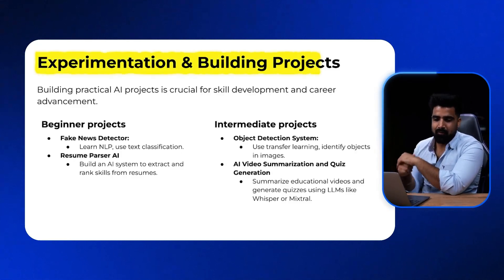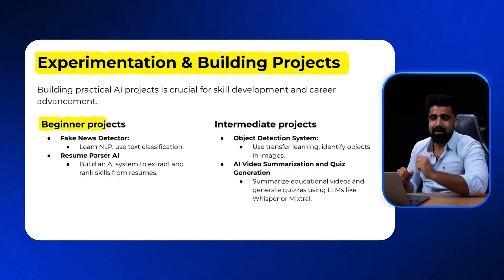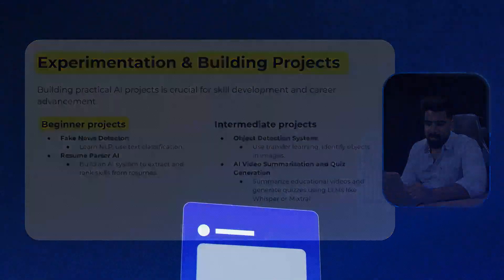Now the important part: experimentation and building projects. If you are a beginner in AI, you can pick up projects like a Fake News Detector, which can be built using raw natural language processing, and here you can apply concepts like text classification. If you do not want to spend time building the model, you can download a model from Hugging Face and directly do the text classification. But if you want to do it from scratch, you can use libraries like NLTK or spaCy to build the application.